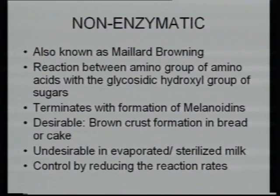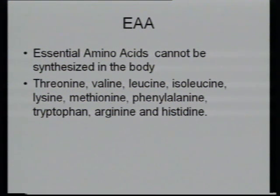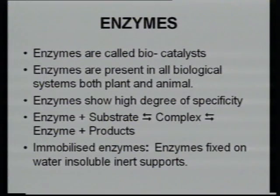To control Maillard browning, you can reduce the reaction rate — if the amino group and hydroxyl group don't come together, or the rate of reaction is slowed down, browning can be slowed. Essential amino acids are those which cannot be synthesized in the body and must be provided through food. There are nine such essential amino acids. This is particularly important when developing health foods or nutritional foods.